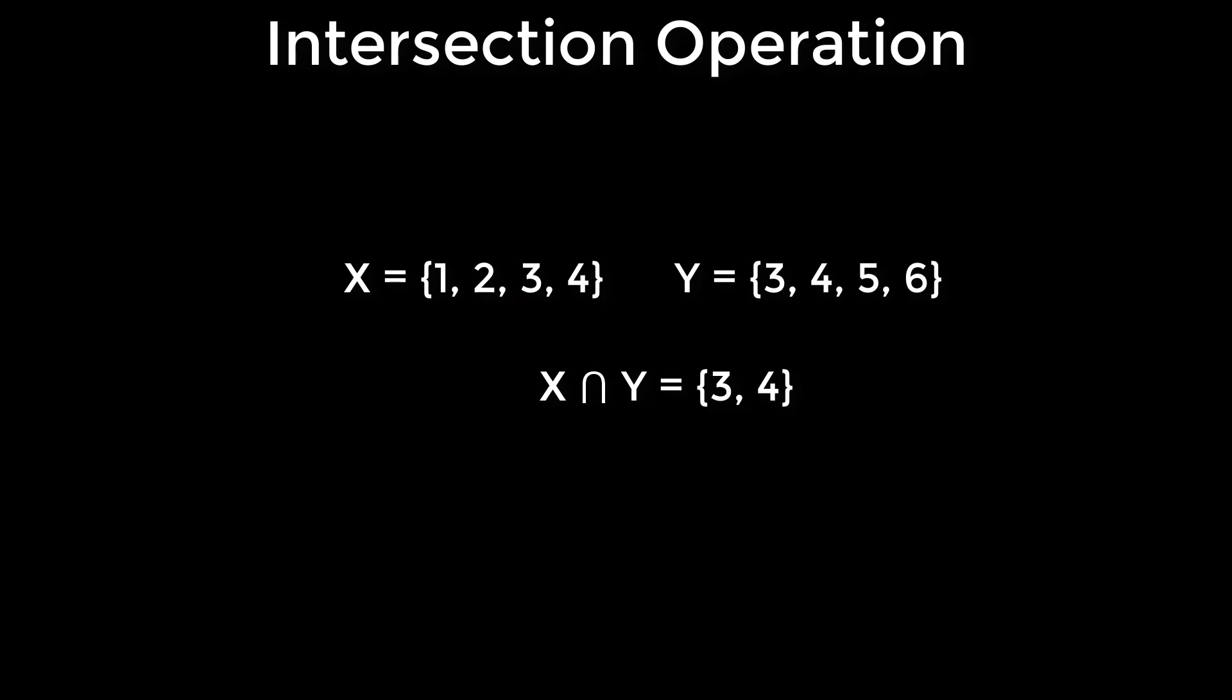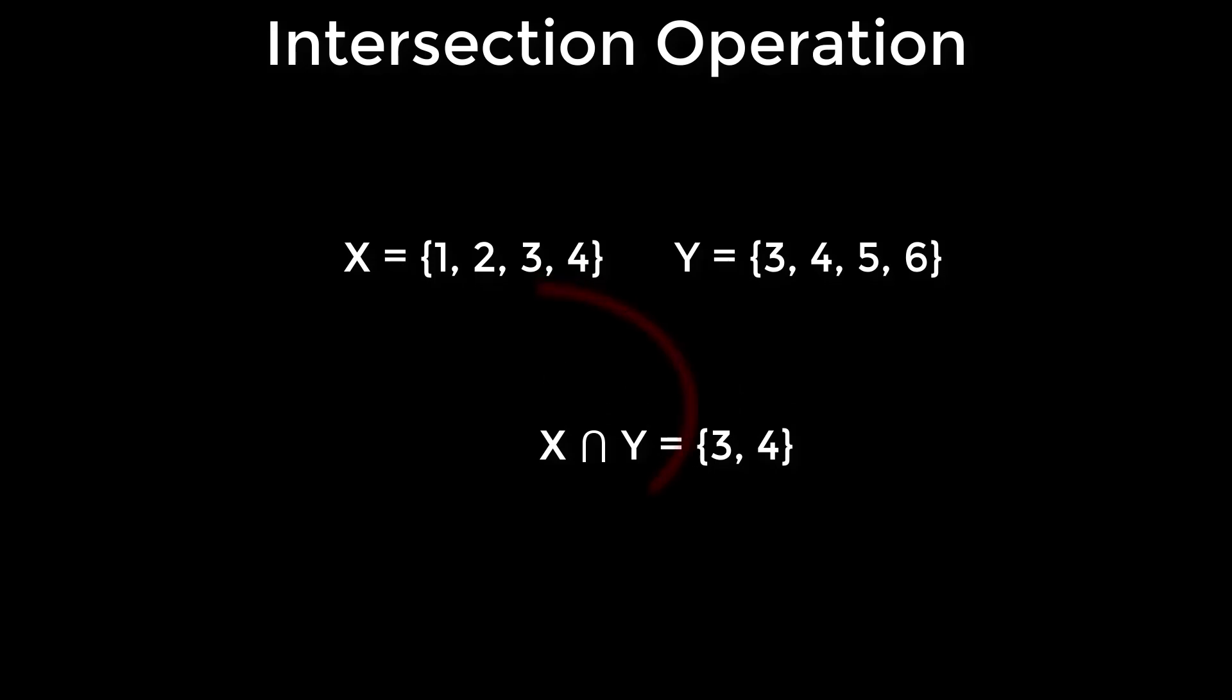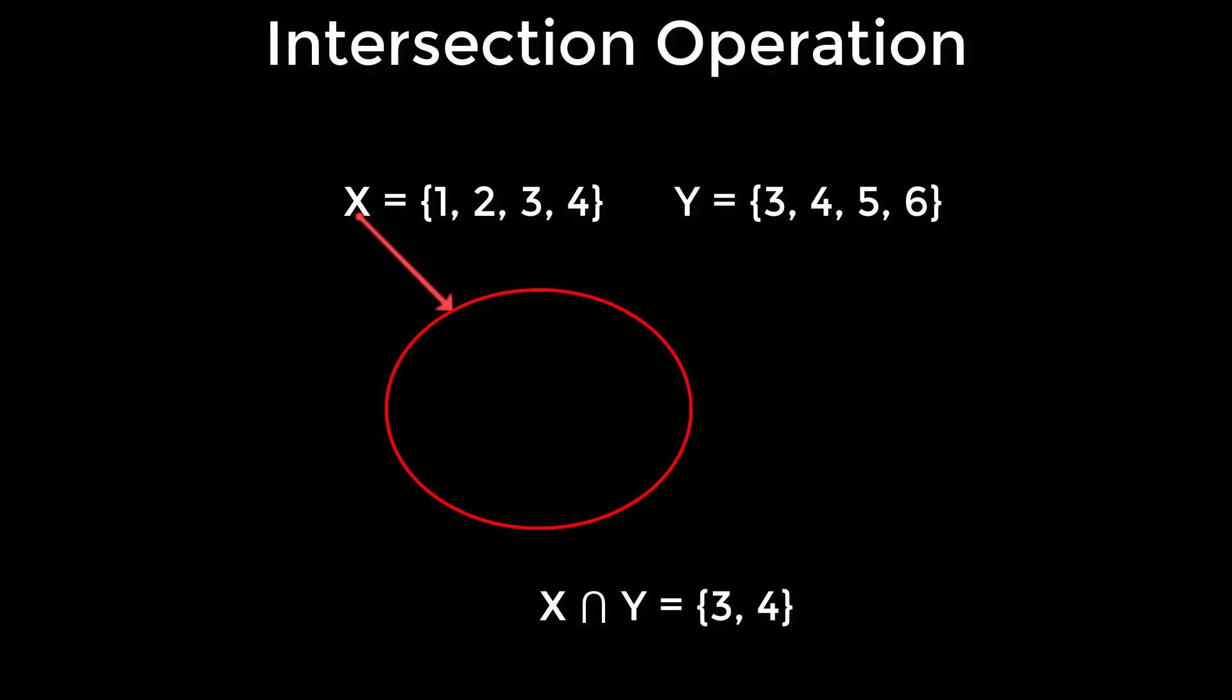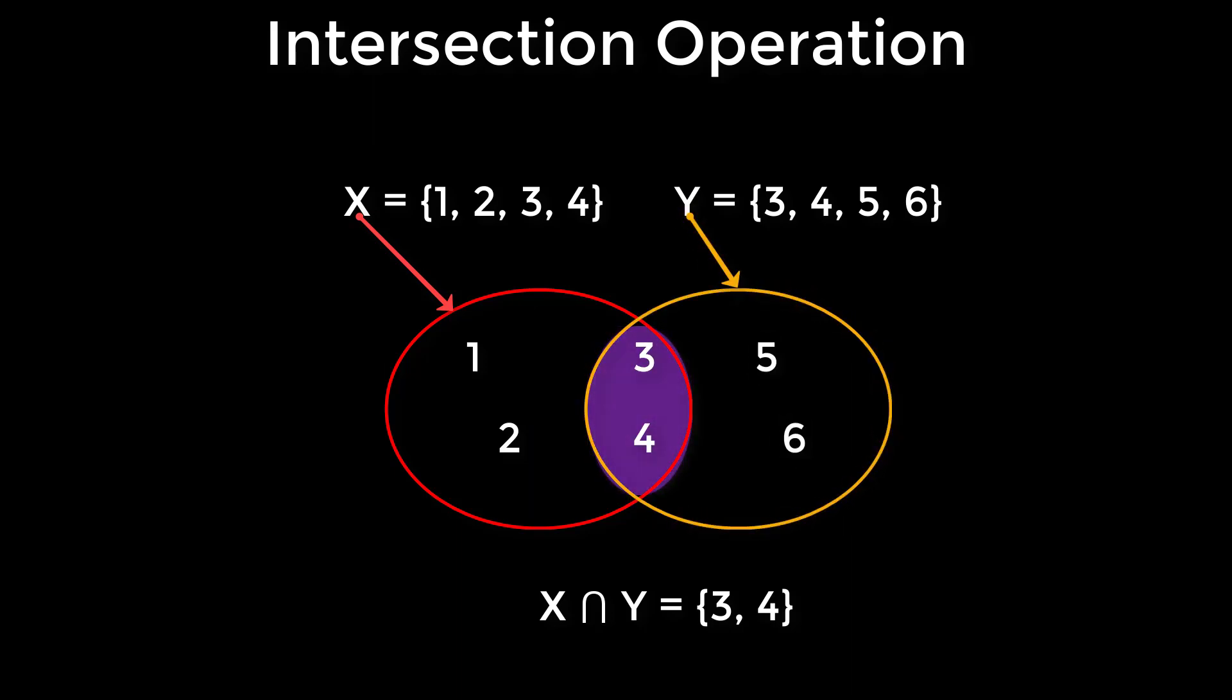The intersection operation is easier to understand from Venn diagram. Here is the Venn diagram of X and here is the Venn diagram of Y. And here, 3 and 4 are common for both. This common area is the X intersection Y.